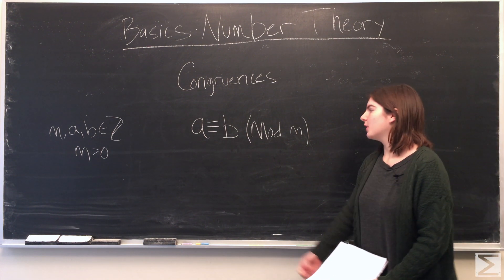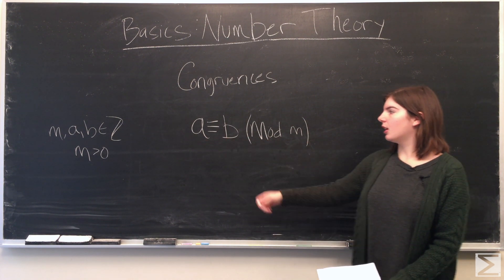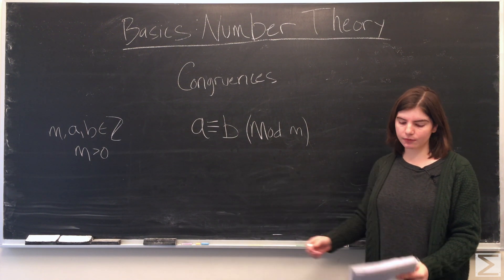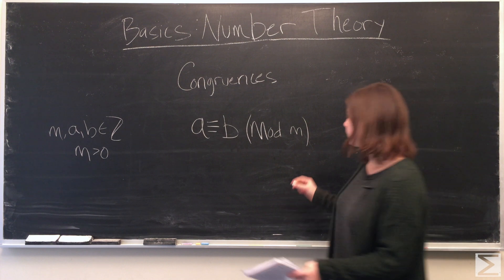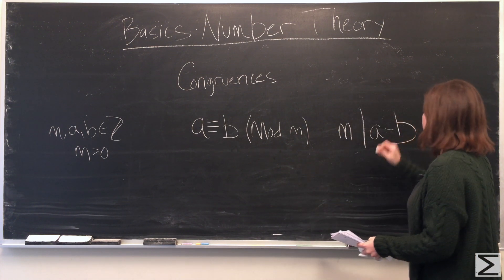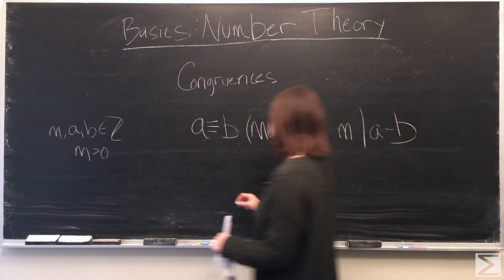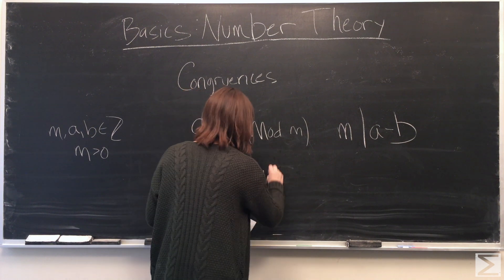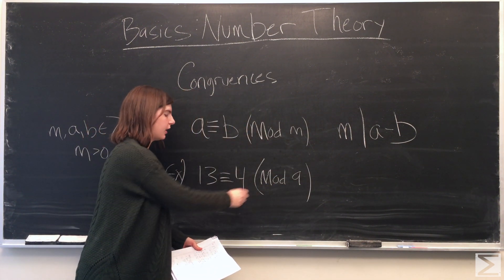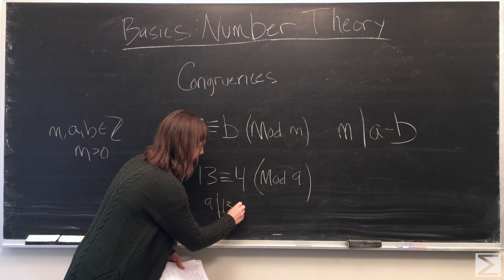When we have a statement like this, it reads: a is congruent to b modulo m. Here, a and b are integers and m is a positive integer. What this means is that m divides a minus b. For example, 13 is congruent to 4 modulo 9 because 9 divides 13 minus 4.